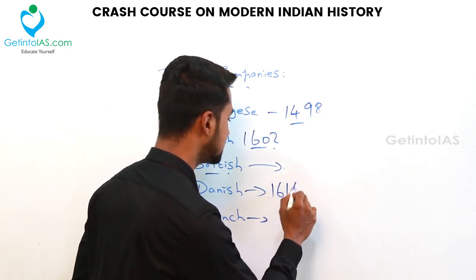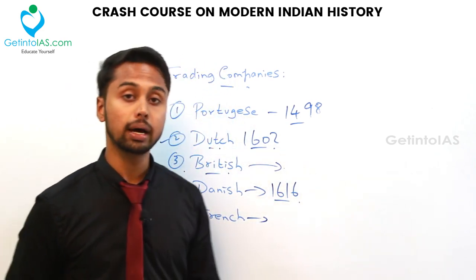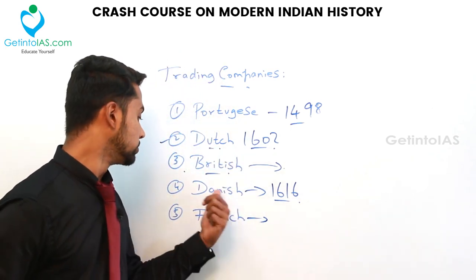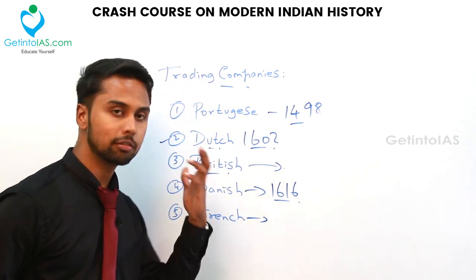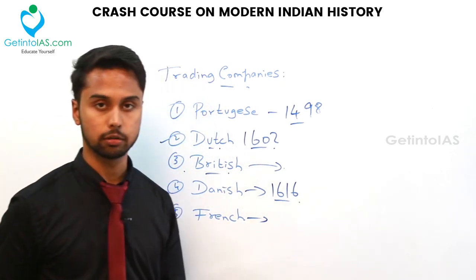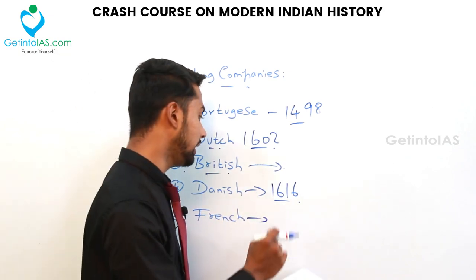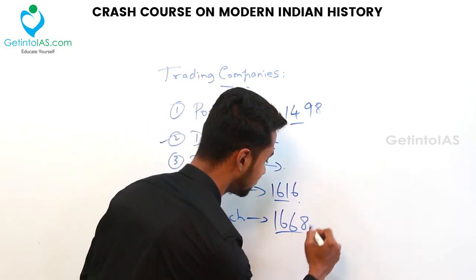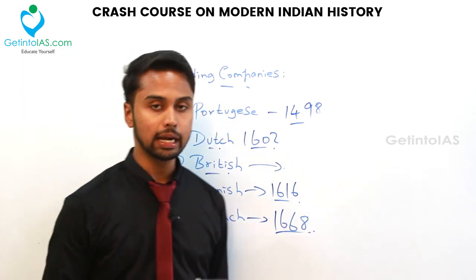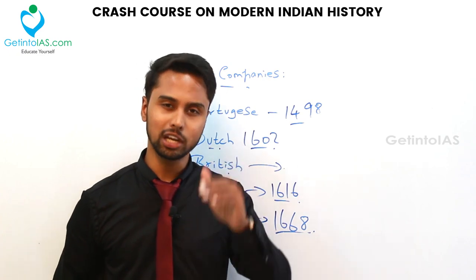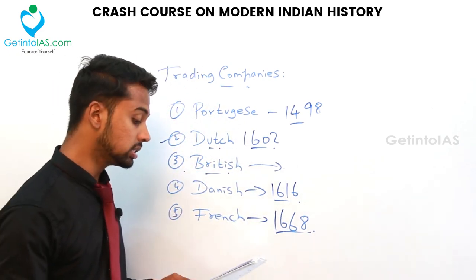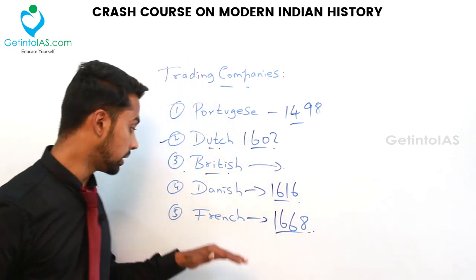The Danish came in 1616. Finally, the French were the last people to come to India. Their first factory was set up at Surat by François Caron in 1668, and they acquired Pondicherry in 1673. The important French governor general was Dupleix.